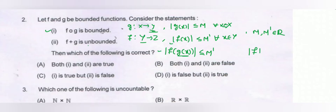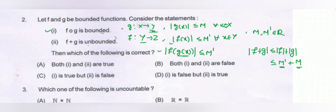Since |g(x)| ≤ m and |f(x)| ≤ m', both are real numbers, and the addition of two real numbers is a real number, so f plus g is also bounded. Therefore statement one is true and statement two is false. Option C is the correct option.